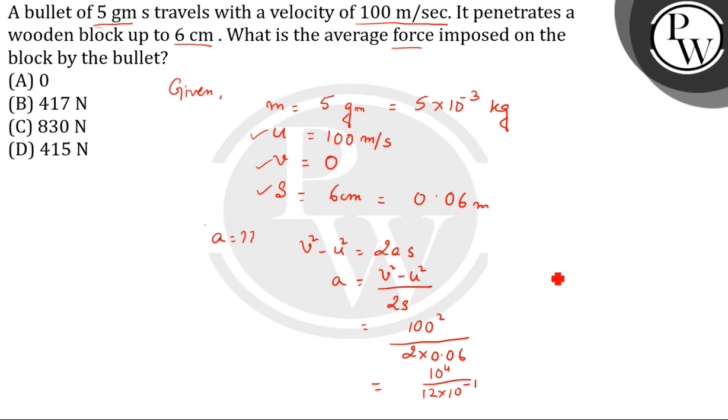Now we will find the force. F = m × a. The mass is 5 × 10⁻³ kg, and acceleration is 10⁴ / (12 × 10⁻¹). So F = 5 × 10⁻³ × 10⁴ / (12 × 10⁻¹). After calculation, we get the value as 417 N.